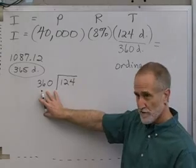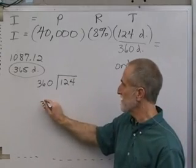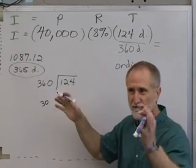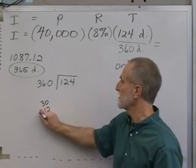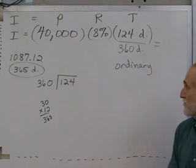So, what banks said before there were computers and calculators, they said, let's just assume every month has 30 days, roughly, for an average. There's 12 months in a year, so there's 360 days in a year. And that's how ordinary interest came about.